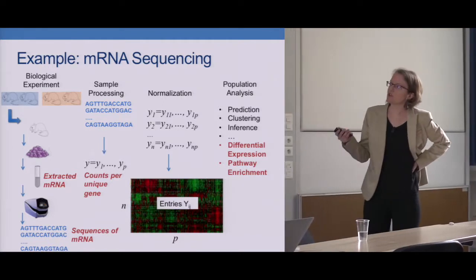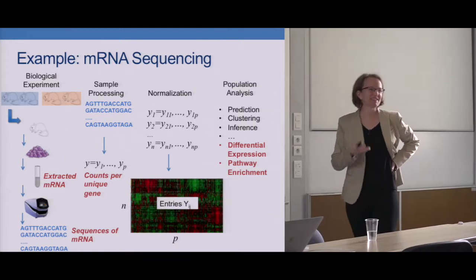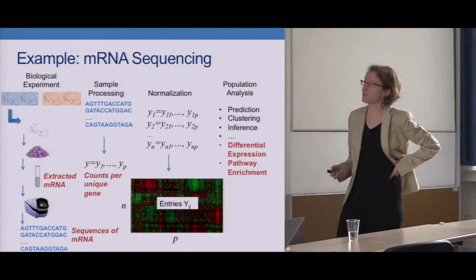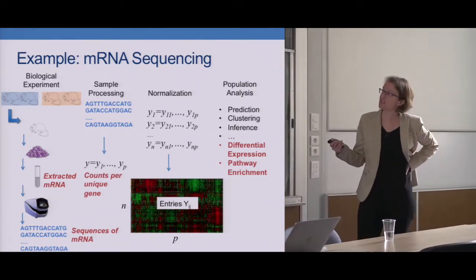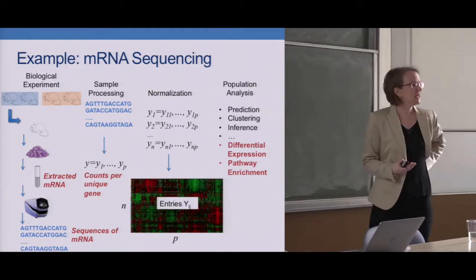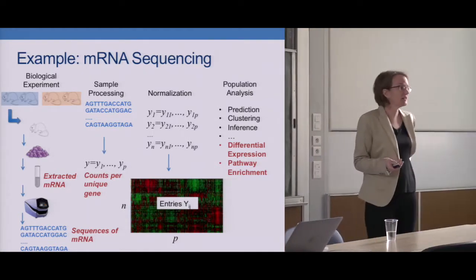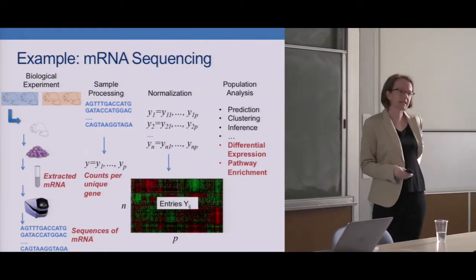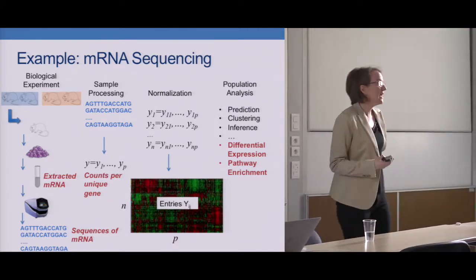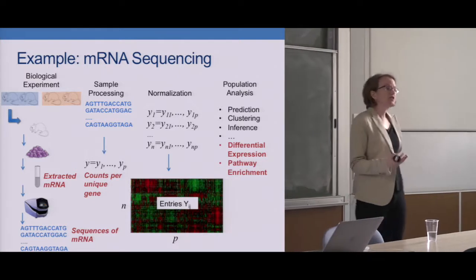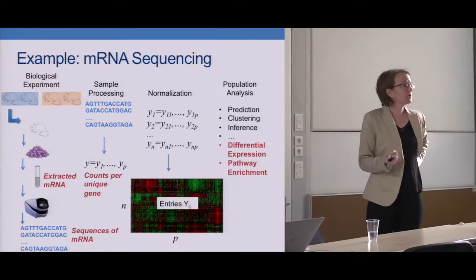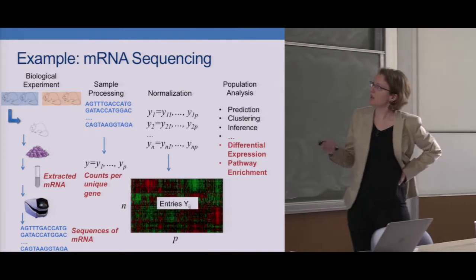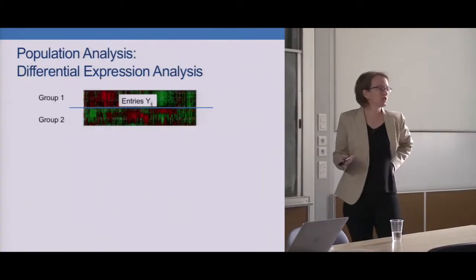That's a key component of high-throughput experiments. The last component is probably what most people get most interested in for data science: once the data is cleaned up, you have this nice matrix and you can start asking data analytic questions. We can do prediction, clustering, inference — all the standard data science toolboxes — applied to this matrix. Of course, like so many modern datasets, we have more features than samples, so we're in a high-dimensional setting. But there are also certain strategies common to this area that are a bit different from many other data science applications.